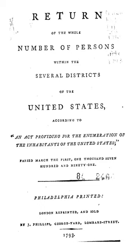In the United States, census data indicate that the number of children in interracial families grew from less than one-half million in 1970 to about two million in 1990. In 1990, for interracial families with one white American partner, the other parent was Asian American for 45%.